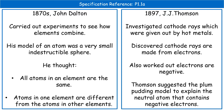Scientist number two is Thomson. Thomson used those cathode ray experiments, and what he discovered was that cathode rays are actually made from things we call electrons. He worked out those electrons are negative, and so he came up with the plum pudding model to explain the neutral atom — basically a positive cloud with negative electrons scattered through it.